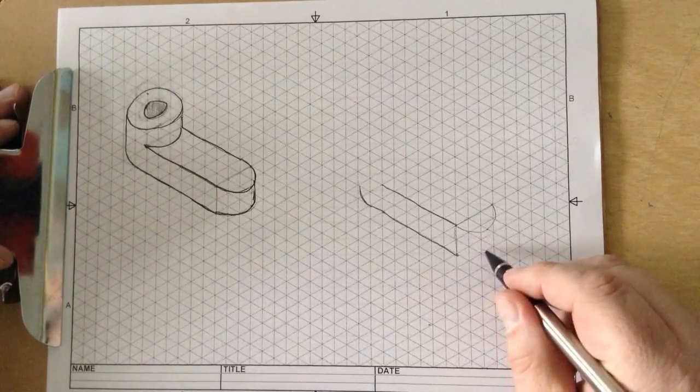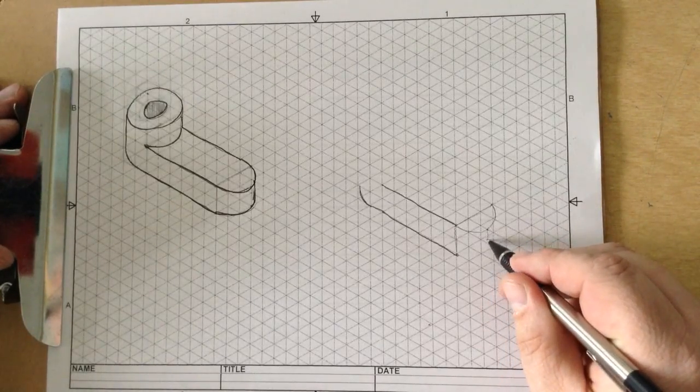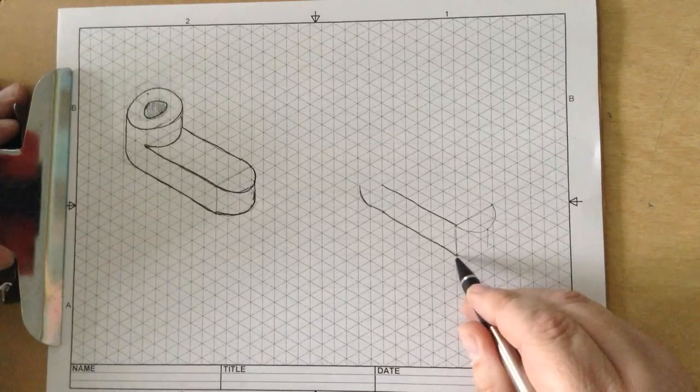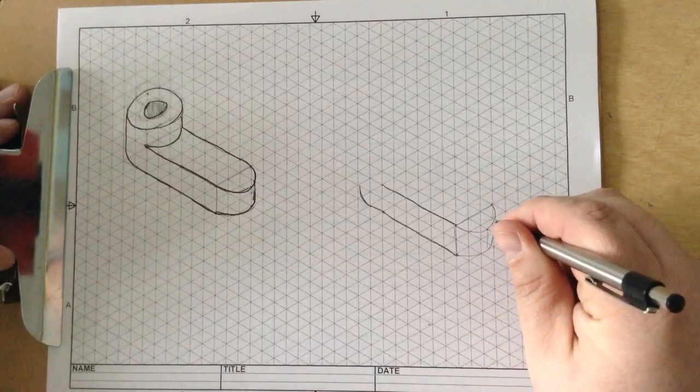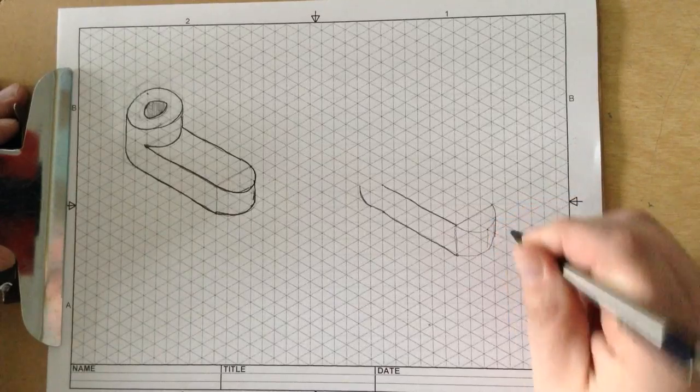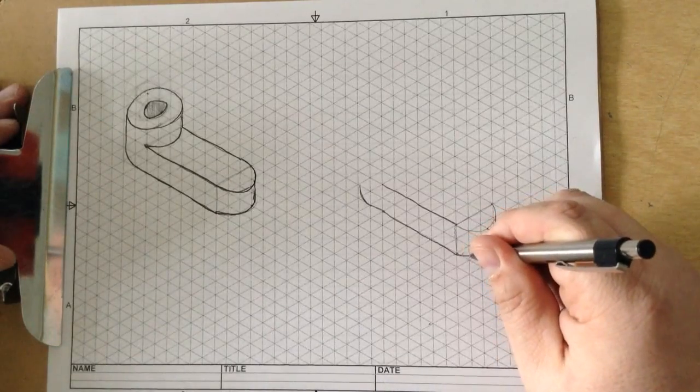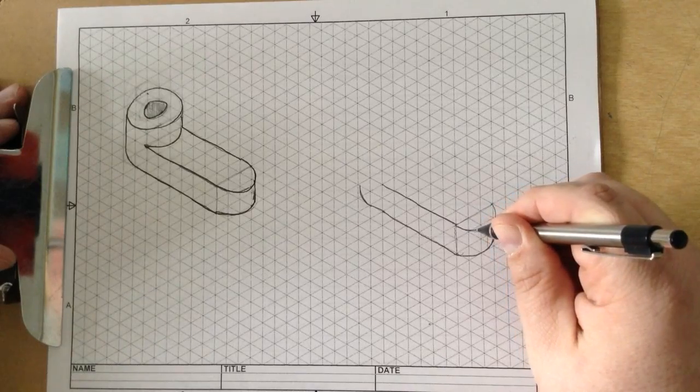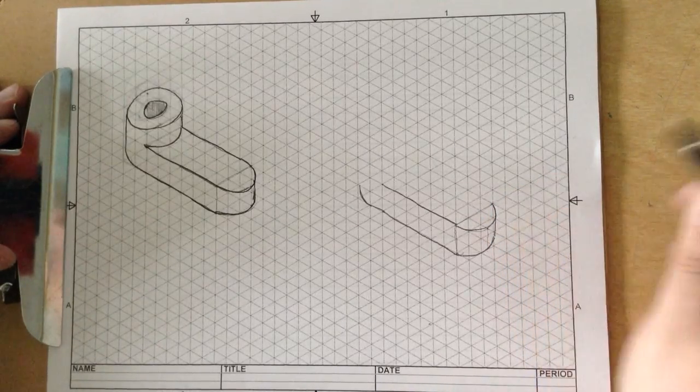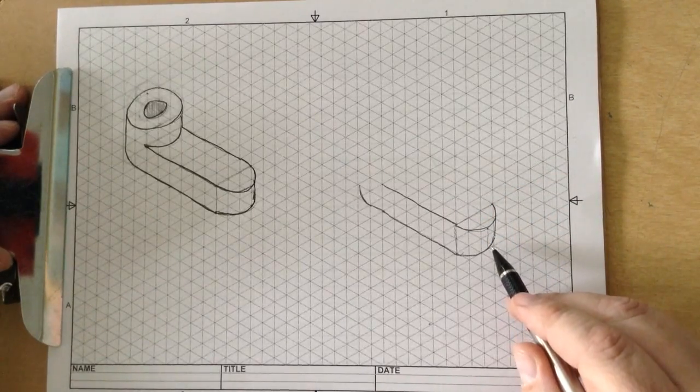So it'll be something like that right there. And then the same thing down here. Draw a line down and just like so. So we have that a little more solidified.